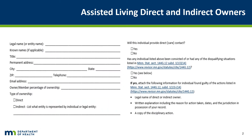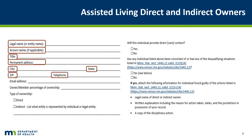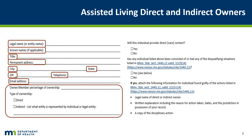The applicant must disclose contact information for all direct and indirect owners in order for the application to be complete. The contact information must include the legal or entity name and known name, if applicable, of the individual, their title, permanent address, active telephone number, a permanent email address, their percentage, and type of ownership.